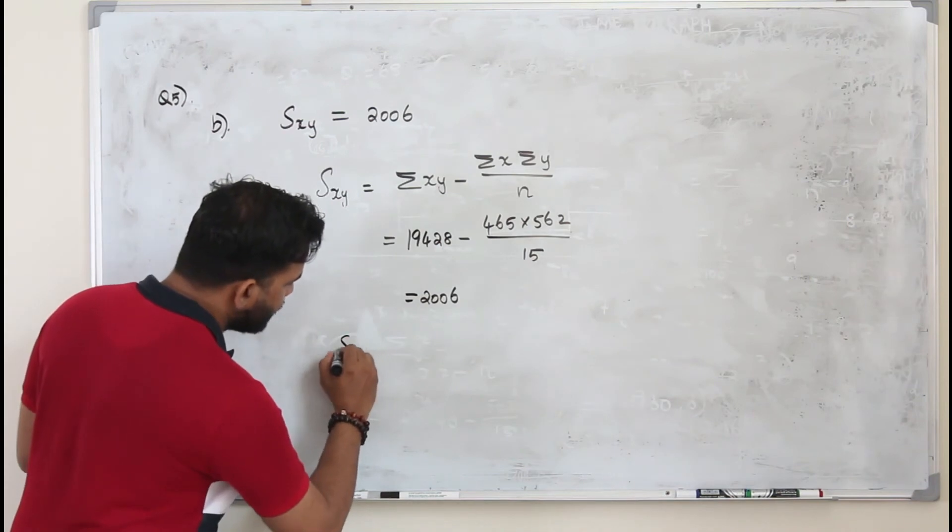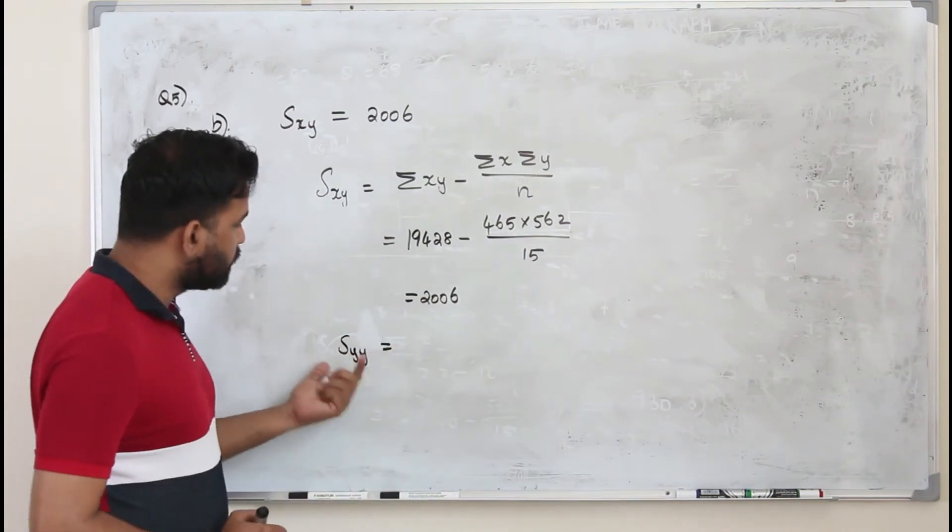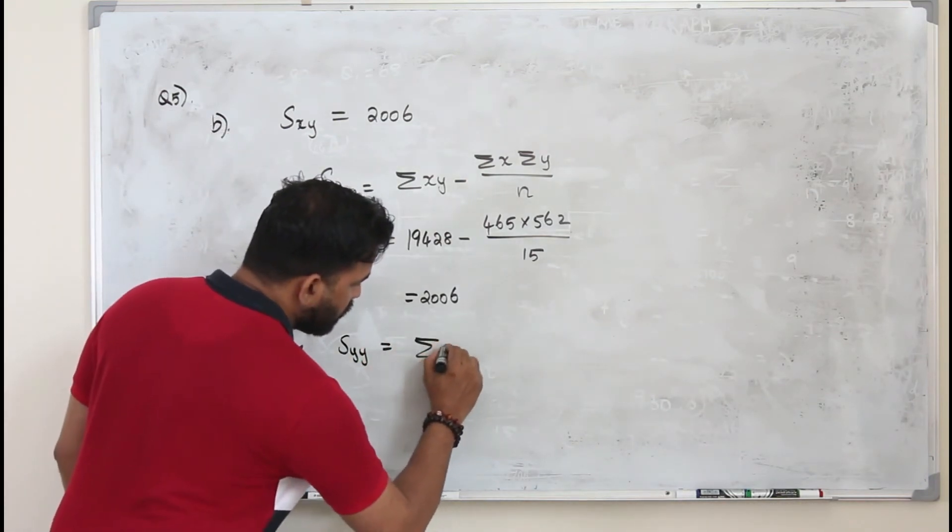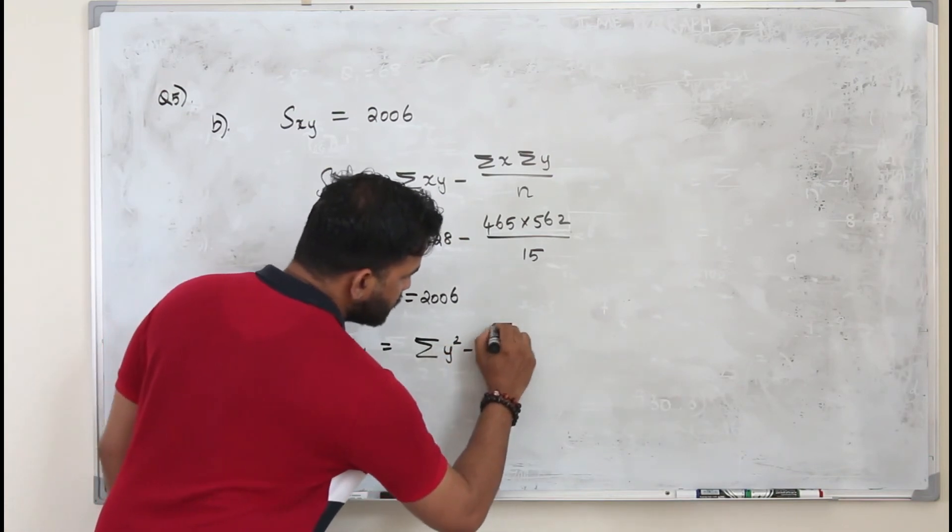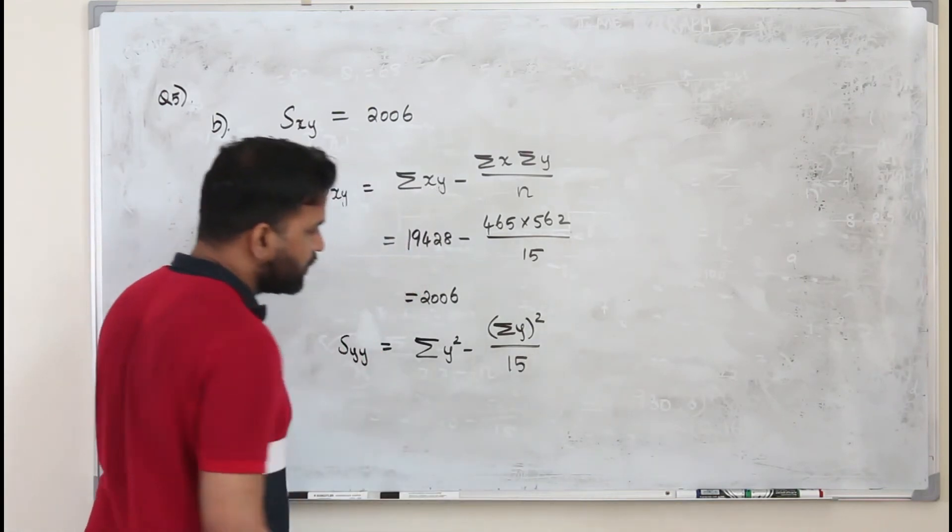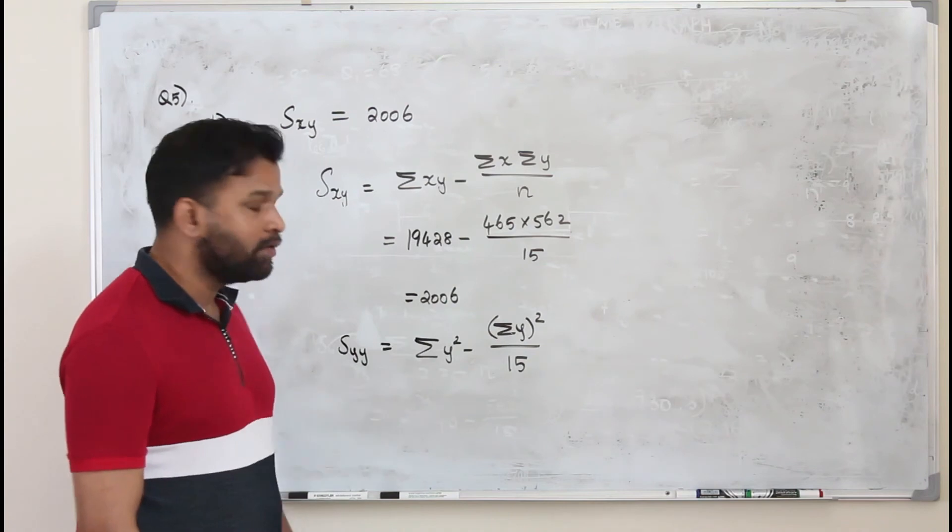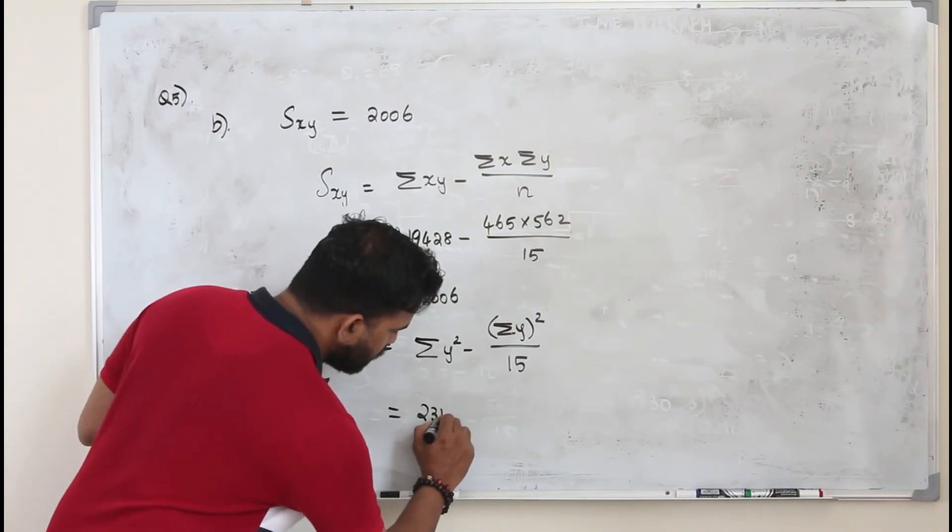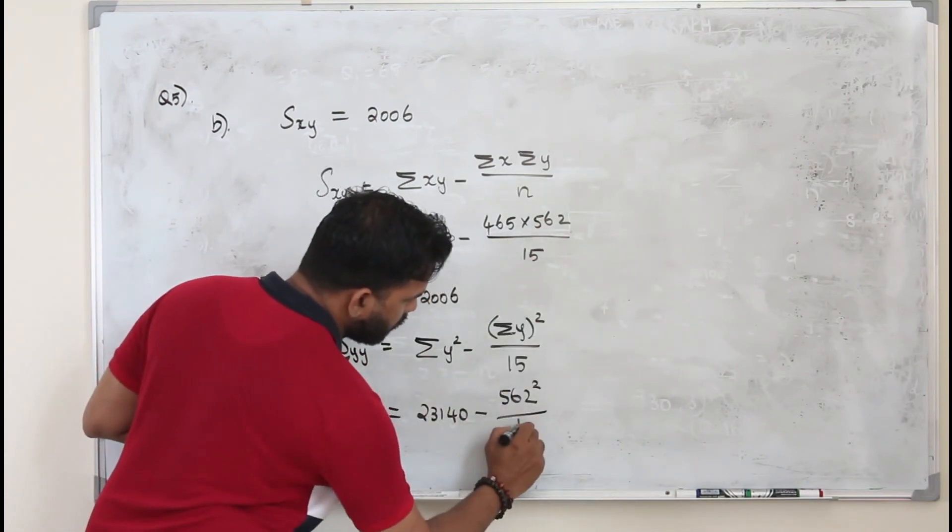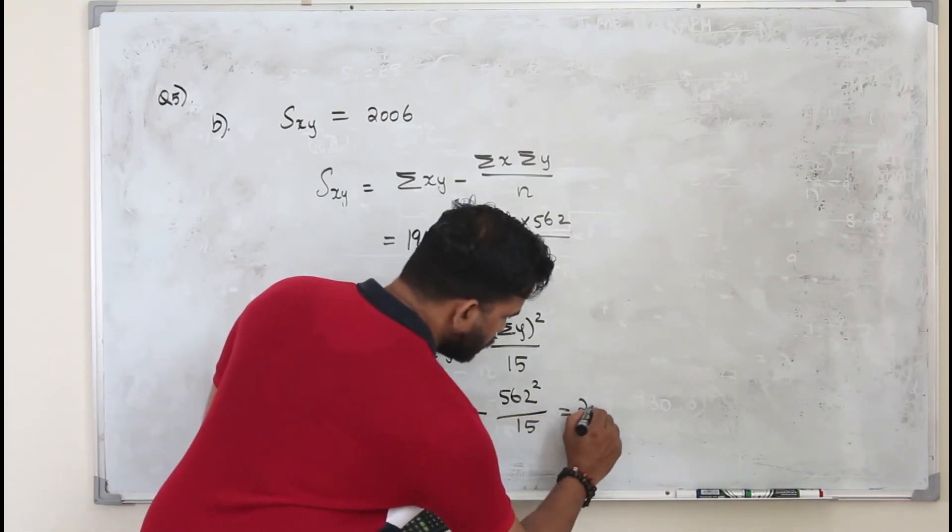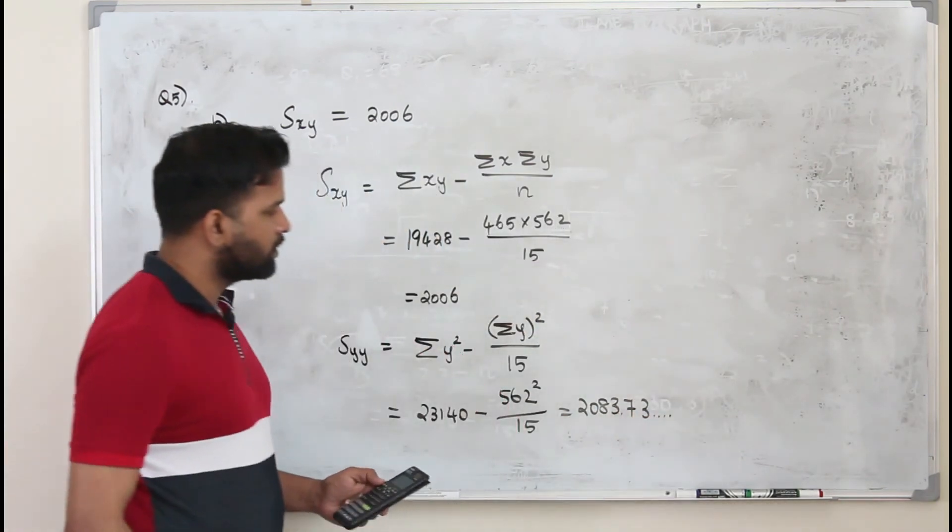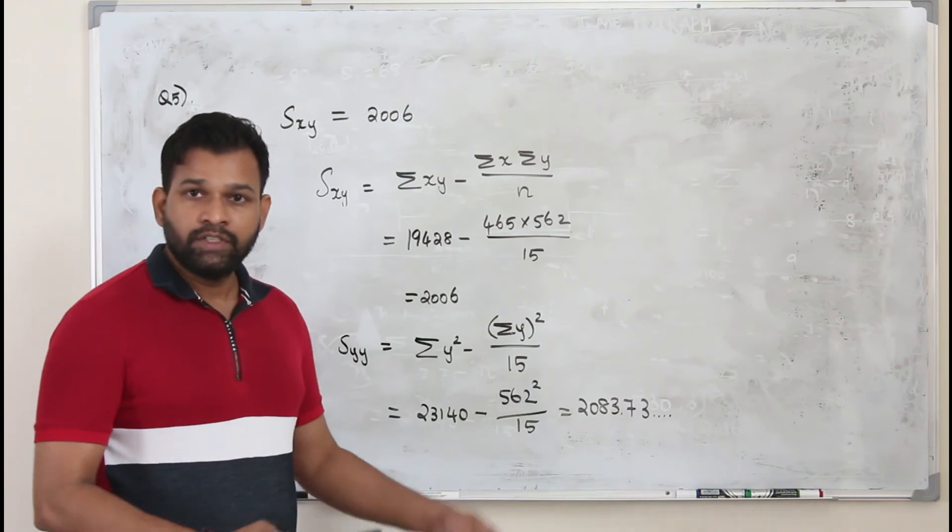Now here they want you to find Syy. The formula to find Syy, you can take these formulas from your data booklet, is Σy² minus (Σy)² over n. n is 50. So plug in these values, you get the value of Syy. This is 23140 minus 562² over 50, which is 2083.7333. Just keep the value as it is, you don't need to round the figure.